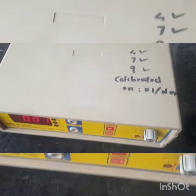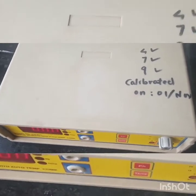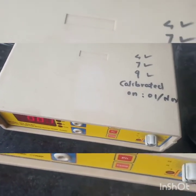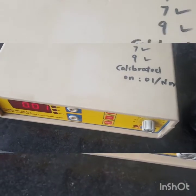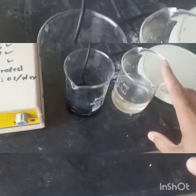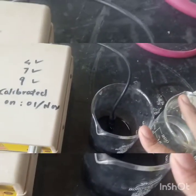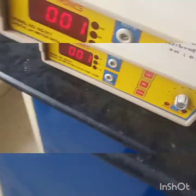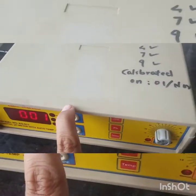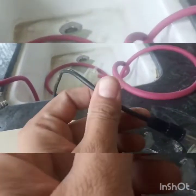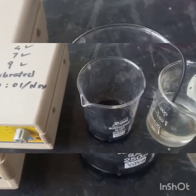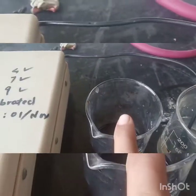This is the pH meter for calculating pH of the formulation. Switch on the pH meter, first take the reading in distilled water as a reference, then immerse the probe into the formulation and record the pH reading.